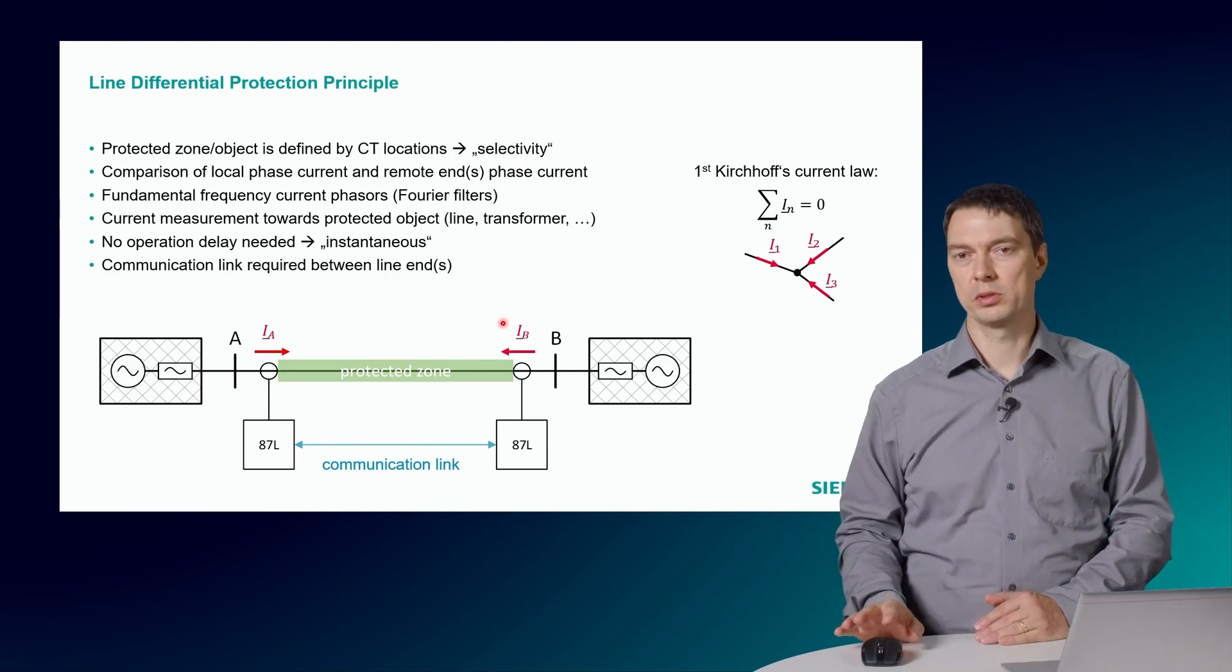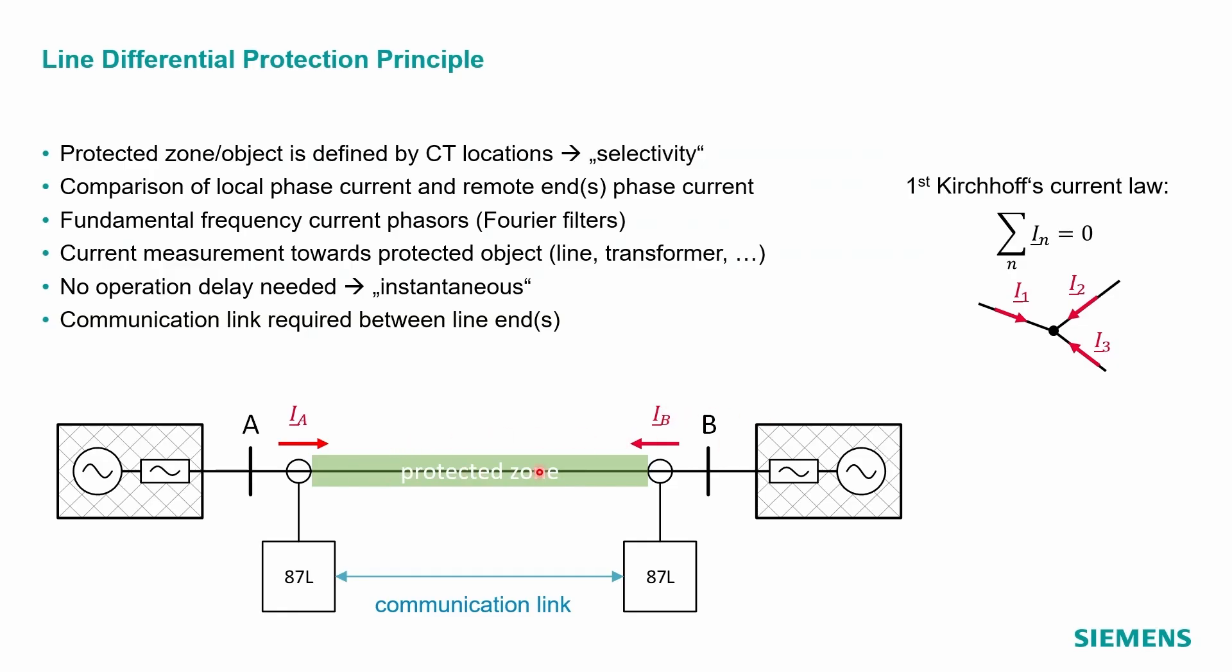The protected zone is shown in below figure here, in the green color. There we have two power grids, A and B, which are connected by a line. The current transformer locations delimit the protected zone and that gives you 100% of selectivity. The measured line currents are evaluated in the connected line differential protection devices, which are marked with the 87L, which is an ANSI code.